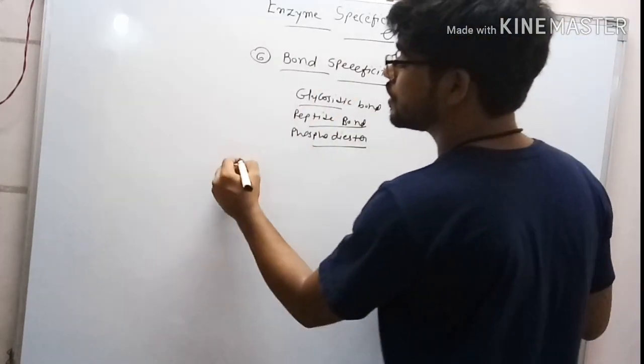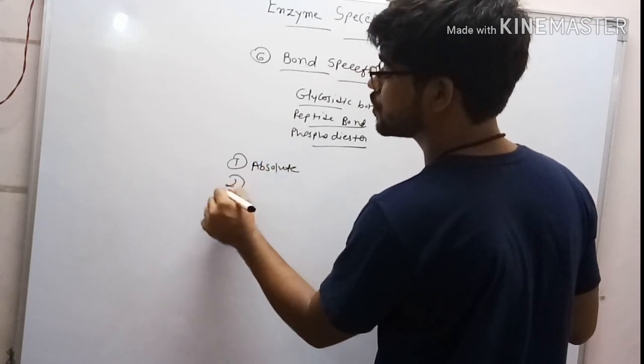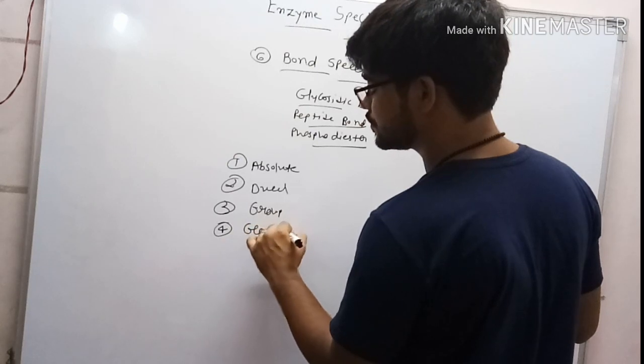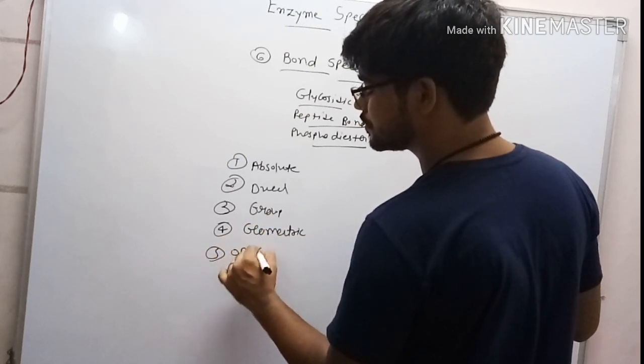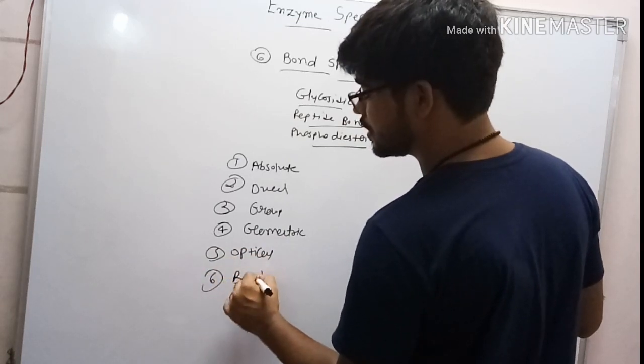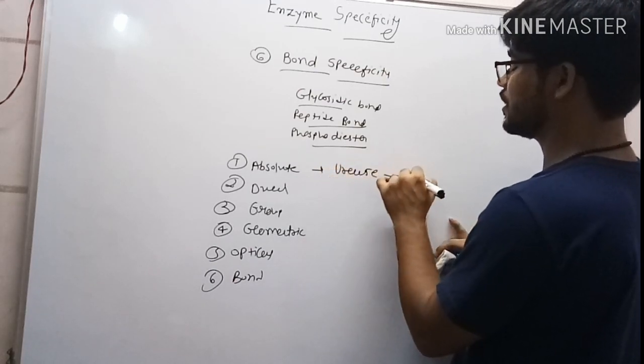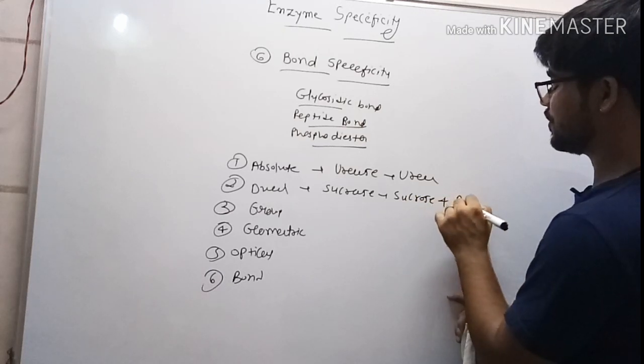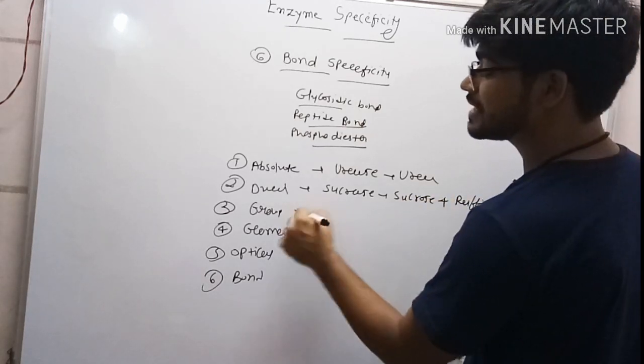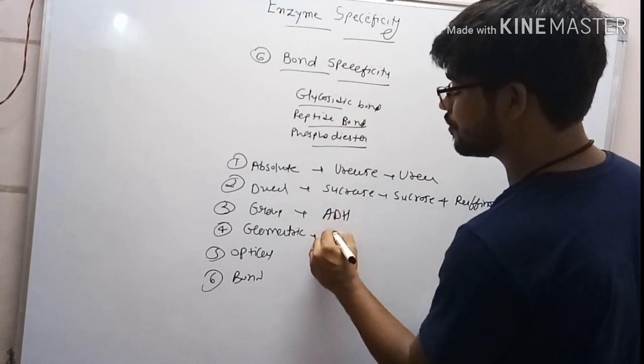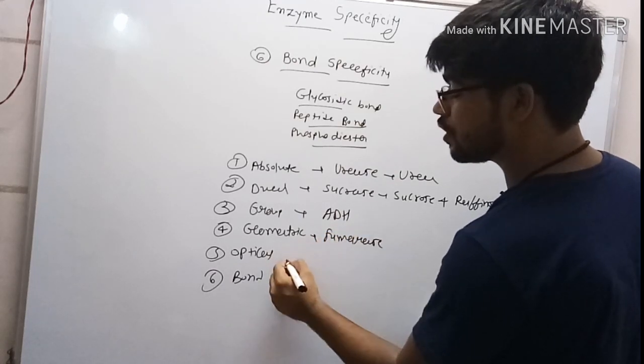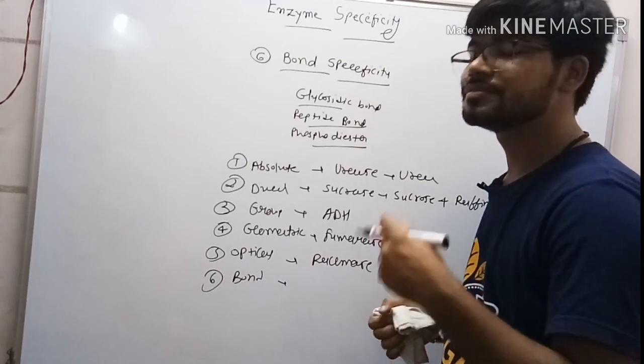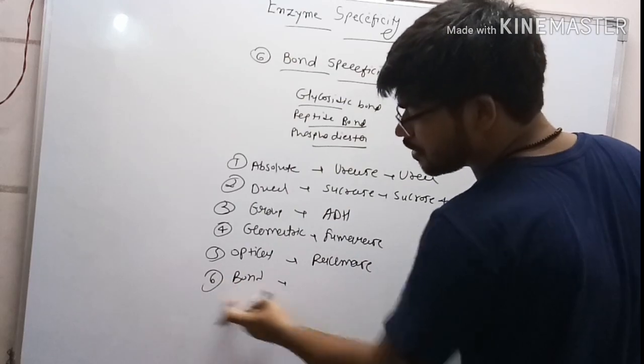So there are six types of specificity. First was absolute—urease works only on urea. Second was dual—sucrase works on sucrose and raffinose. Third was group specificity—alcohol dehydrogenase. Fourth was geometrical—fumarase is the example. Fifth was optical—racemase is the best example. And sixth is bond specificity—enzymes like glycosidic bond breakers are categorized into bond specificity.